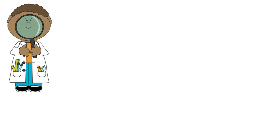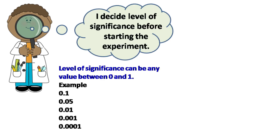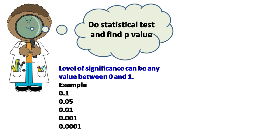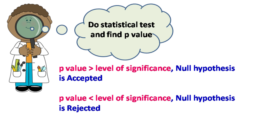To summarize: the researcher first decides the level of significance, then does the experiment and finds the p-value. If the p-value is more than the level of significance, then the null hypothesis is accepted. If the p-value is less than the level of significance, then the null hypothesis is rejected.